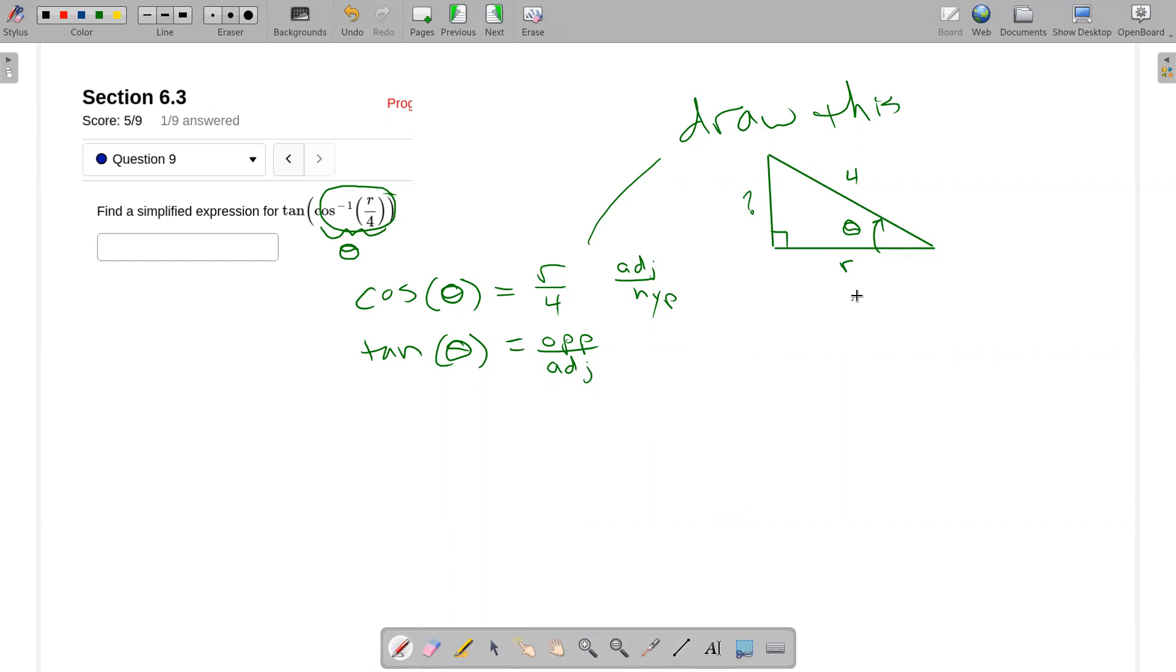Pythagorean theorem says question mark squared plus r squared is equal to 4 squared. And I want to know what that question mark is. So we'll solve for the question mark. Subtract the r squared over. 4 squared is 16. Take the square root.